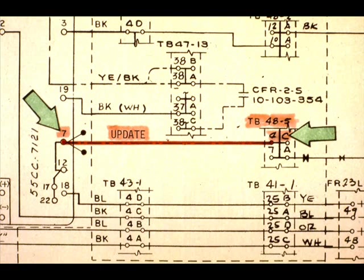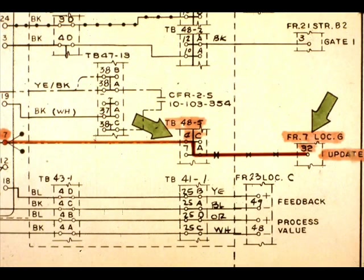The update line is a signal path to controller terminal 7 from TB485, terminal 4C. The update signal comes to TB485, terminal 7A, from computer frame 7, location G, terminal 32.